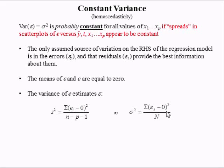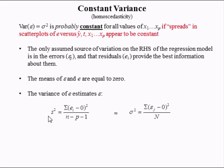Both have mean zero. When we're computing a population variance, we divide by the size of the population. When we're calculating a sample variance, we divide by the degrees of freedom. Because the error — the estimated error, the residual — is an estimate for the true error, which we're never going to know, we can say that the variance of the estimated error, or residual, is an estimate of the true variance of the error.